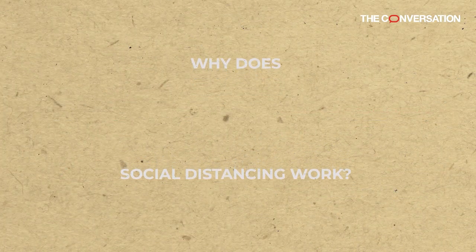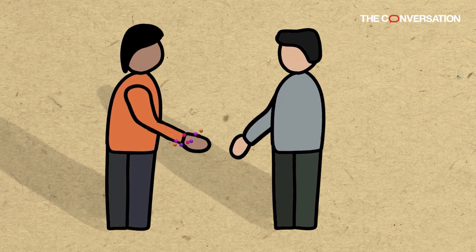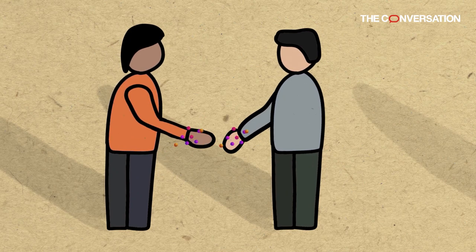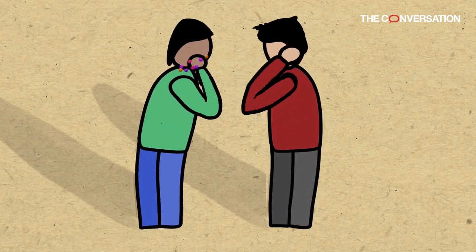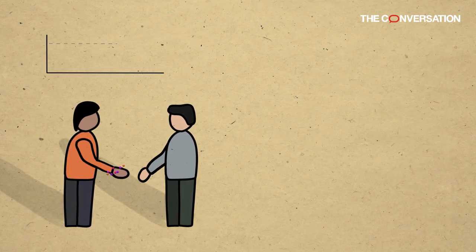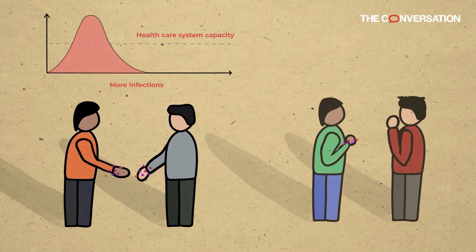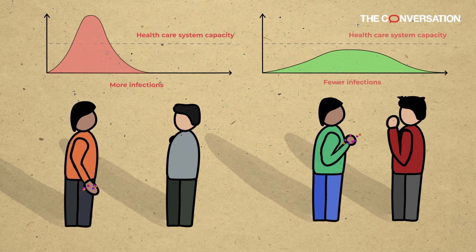Why does social distancing work? If done correctly and on a large scale, social distancing breaks or slows the chain of transmission from person to person. This flattens the curve so that the medical care system is not overwhelmed.